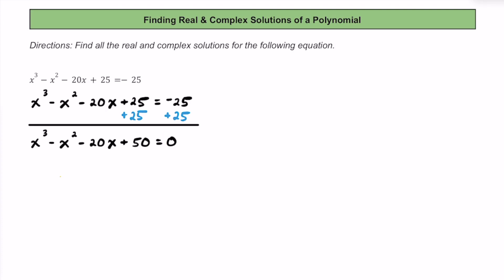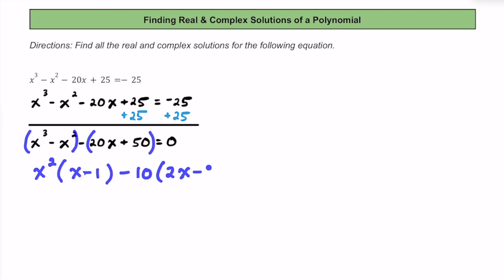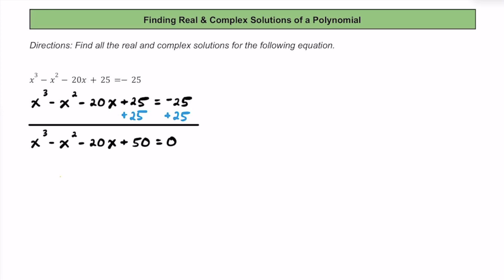With these cubic polynomials that have four terms, it's always a good idea to see if we can factor by grouping — grouping the first two and the second two. But that's not actually going to work here. You could factor out x squared from the first grouping, and then factor out negative 10 as a GCF to get 2x minus 5. But notice that we don't have anything that matches, so we can't factor by grouping. Instead, we can use the rational zeros theorem and synthetic division to find some zeros.